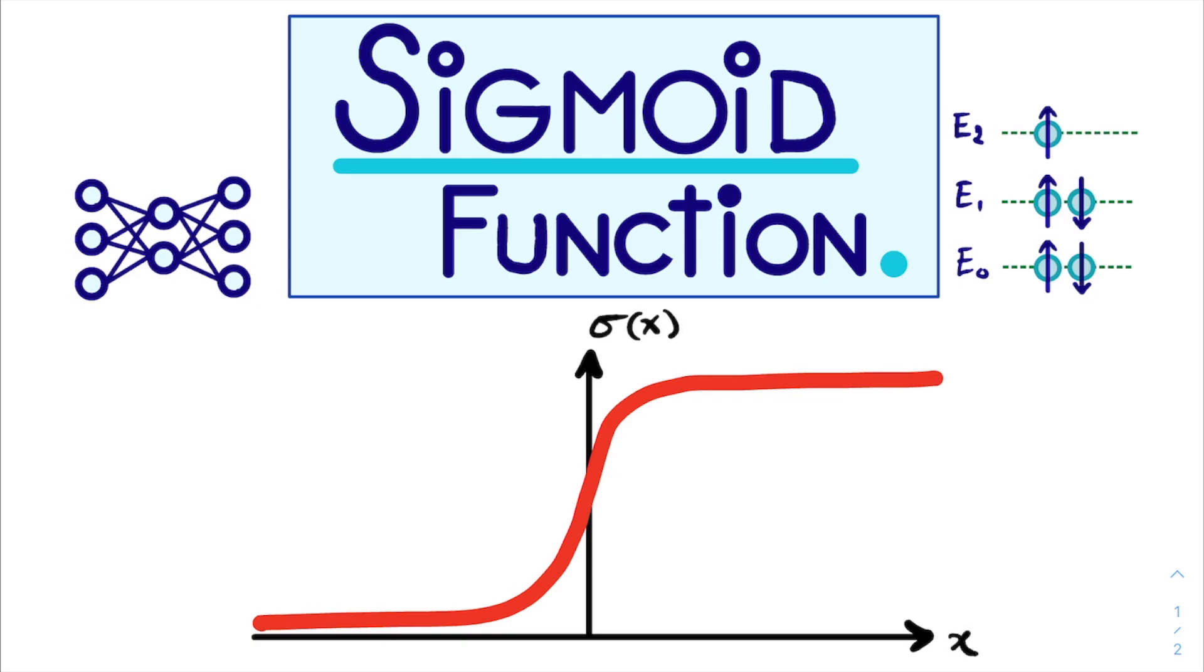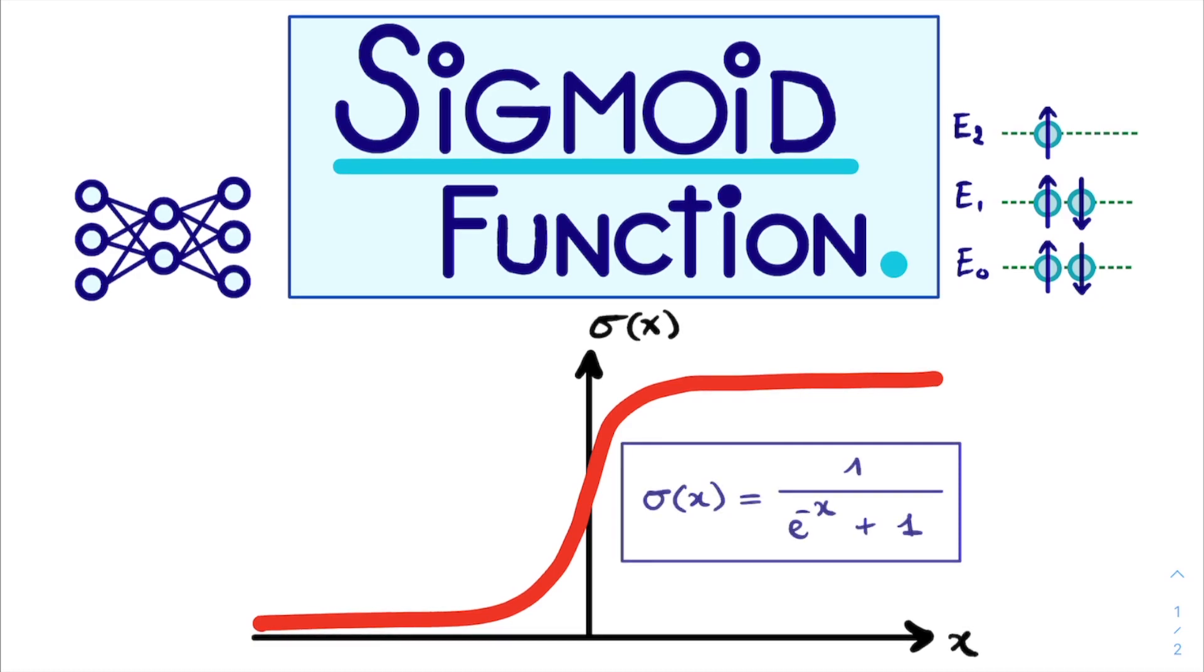The function itself, denoted as sigma of x, reads 1 over e to the power of minus x plus 1. And graphically it looks like this.